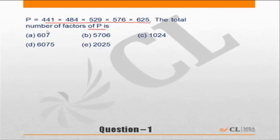441 is 21 squared, 22 squared is 484, 23 squared is 529, 24 squared is 576, and 25 squared is 625.